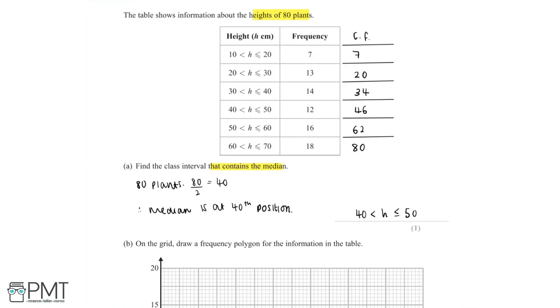Now before we even begin to start part B, we can see we'll need to draw a frequency polygon to represent the information in the table. The data we have here is continuous data, so when we plot the height, we need to use the midpoint of each interval. We can add this to our table.